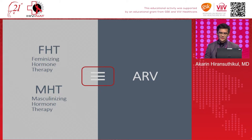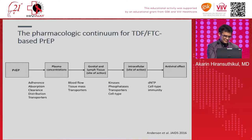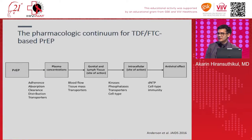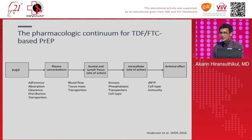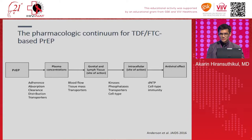This leads me to the current hypothesis regarding drug interaction between GA-HT and ARV. This beautifully made illustration from Anderson and his team, published three years ago, shows the pharmacology continuum for TDF/FTC-based PrEP. When you take PrEP, you want it to get absorbed from the GI tract into blood circulation, which requires good adherence, absorption, distribution, transporters, etc.